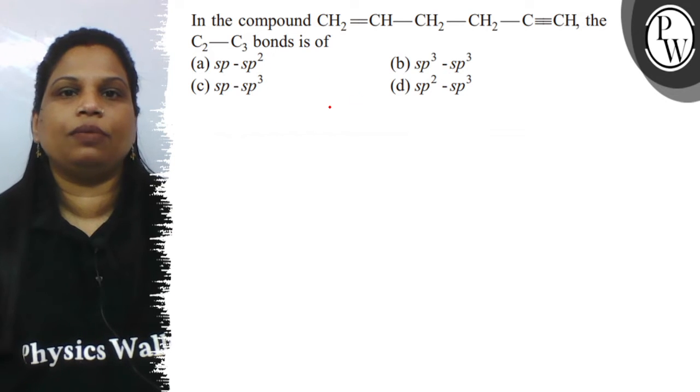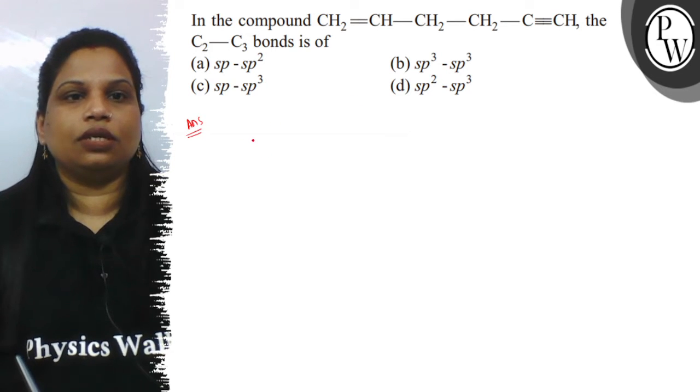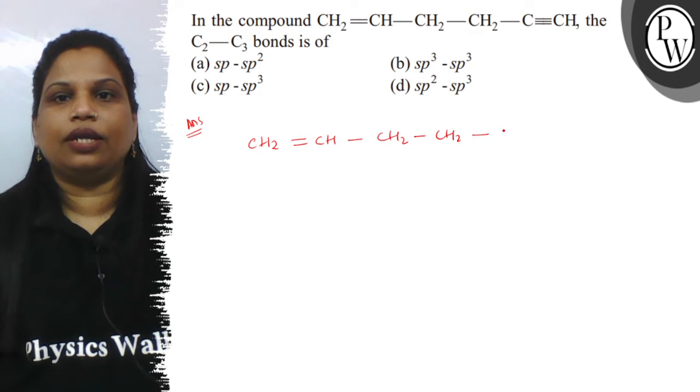Here we can find C2 and C3. So the compound is CH2 double bond CH, CH2, CH2, and C triple bond CH.